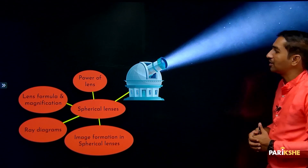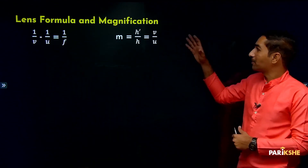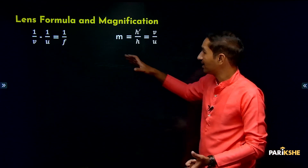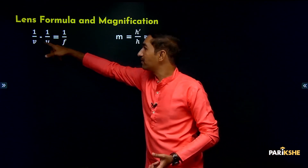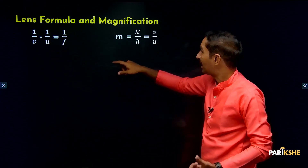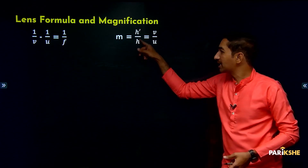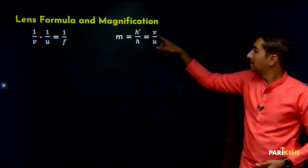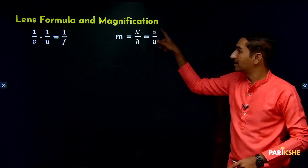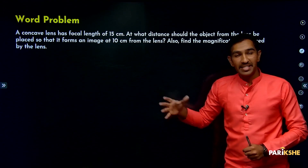Lens formula and magnification. The lens formula is 1/v minus 1/u equals 1/f. Magnification m is equal to h-dash by h, which equals minus v by u, and in some cases just v by u.